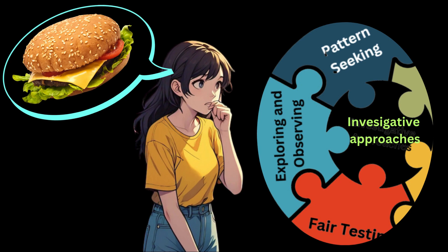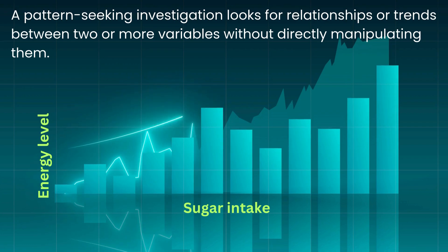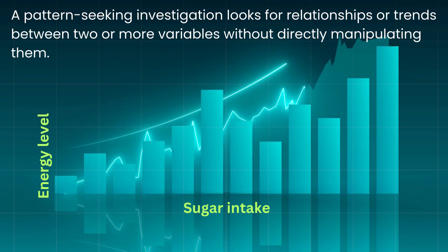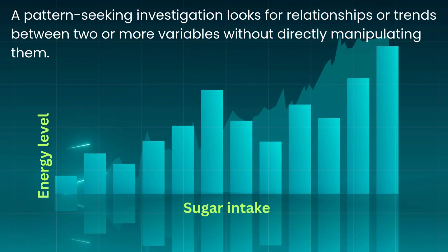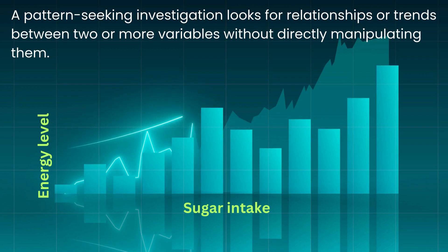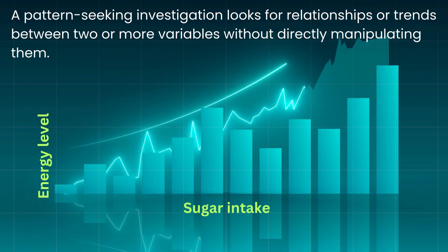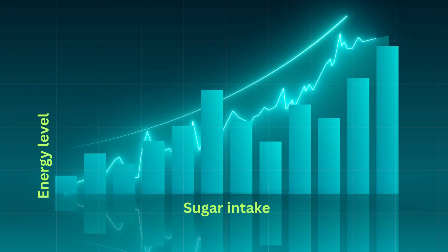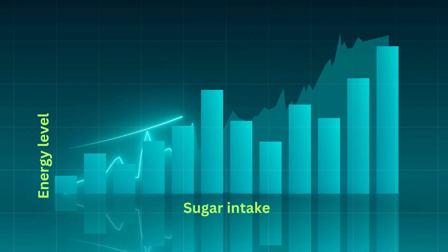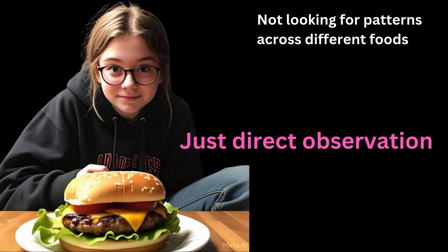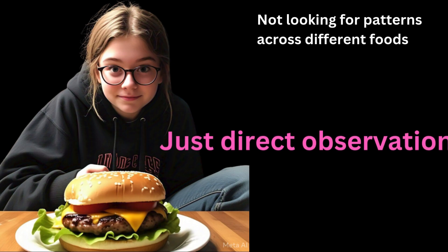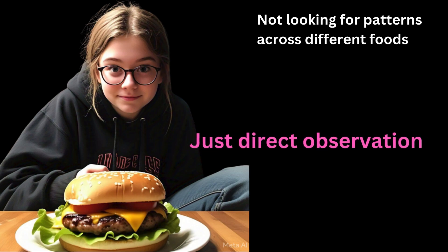When selecting an investigative approach, it's important to match the method to the nature of the research question. In this case, identifying the types of nutrients in a food item requires an exploring and observing investigation rather than pattern-seeking or fair testing. A pattern-seeking investigation looks for relationships or trends between two or more variables without directly manipulating them — it helps answer questions like 'Do people who eat more protein-rich foods have stronger muscles?' or 'Is there a correlation between sugar intake and energy levels?' These questions require large-scale observations and data collection across multiple instances. However, our investigation is about identifying specific nutrients in a single food sample, not looking for patterns across different foods.